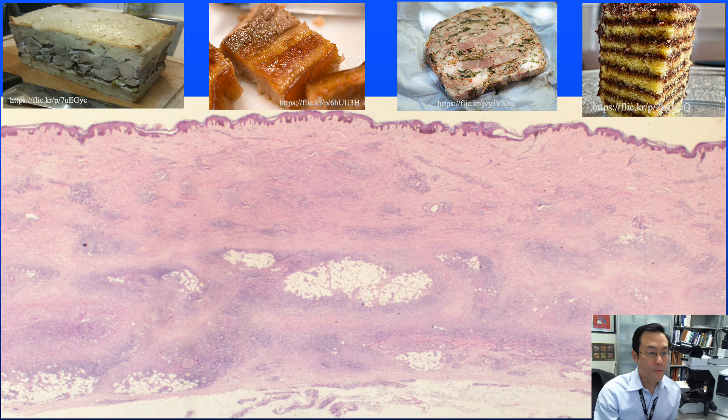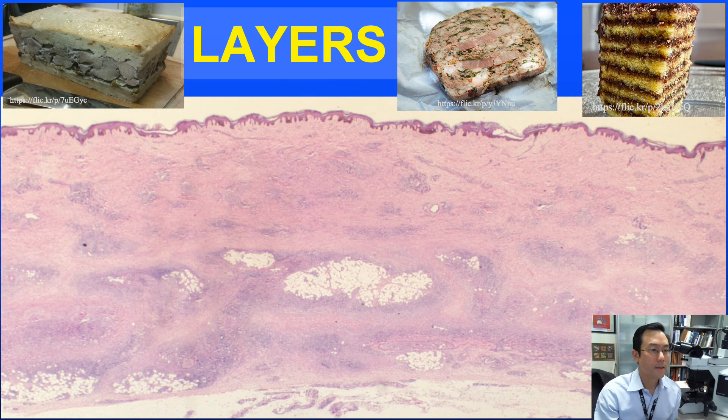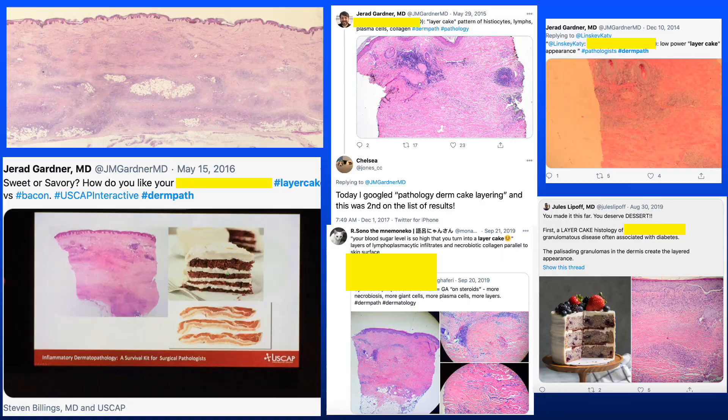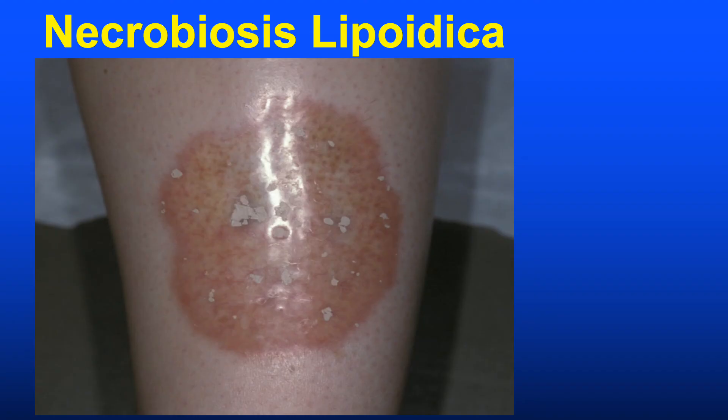Next case: in the DermPath world this is one of the classic food analogies. The concept is to see the layers — like a layer cake. Necrobiosis lipoidica, formerly known as Necrobiosis lipoidica diabeticorum (NLD), is often compared to granuloma annulare, with which it often shares a differential diagnosis.